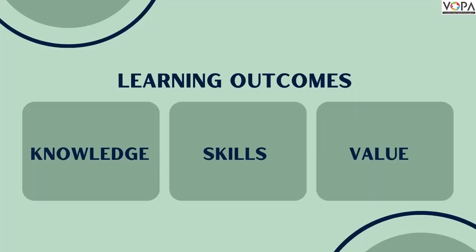In this video, there are three categories of learning outcomes: Knowledge, Skills, and Values.